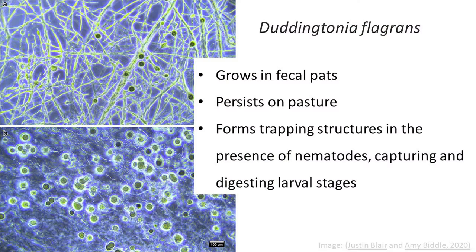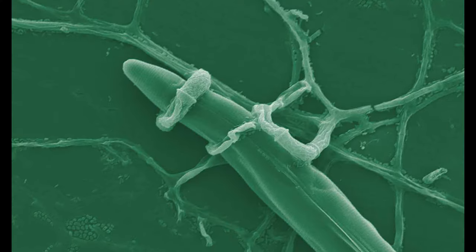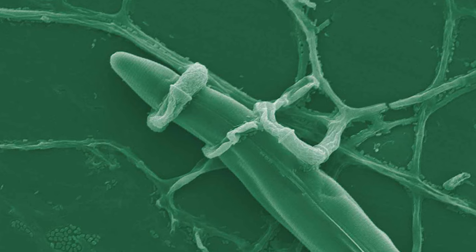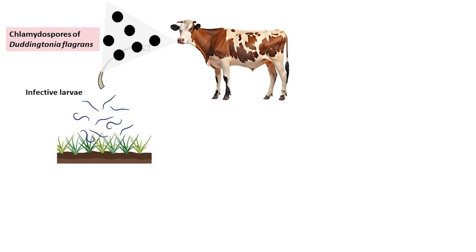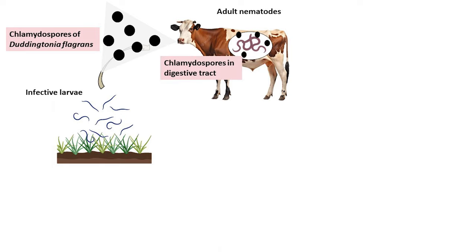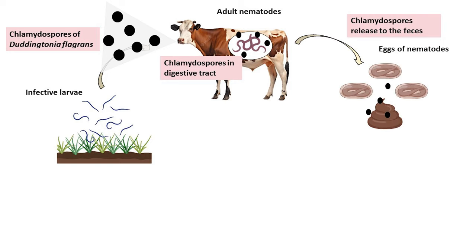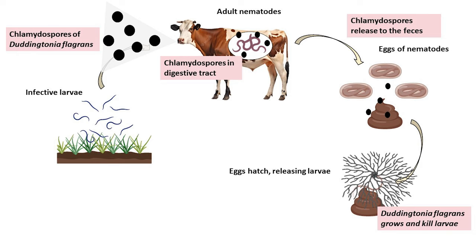One solution could be the chlamydospores of the fungus Duddingtonia flagrans. Duddingtonia flagrans is a predatory fungus that has the ability to grow in fecal pats, persist on pasture, and form trapping structures in the presence of nematodes, capturing and digesting larval stages. It targets parasites in the environmental life cycle stage, thereby preventing infections. This fungus forms chlamydospores that are capable of surviving the digestive tract of the host, and supplementation of food with chlamydospores will deliver the fungus directly to the fecal pats, where the fungus will grow and digest hatching larvae.